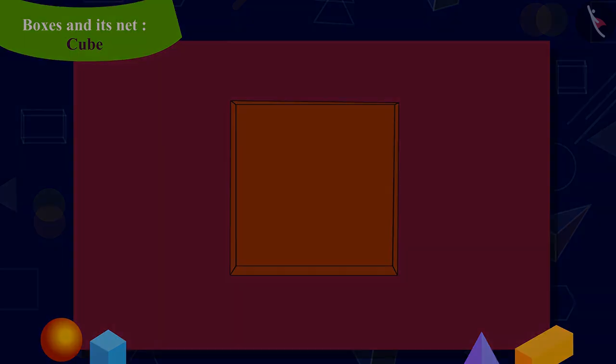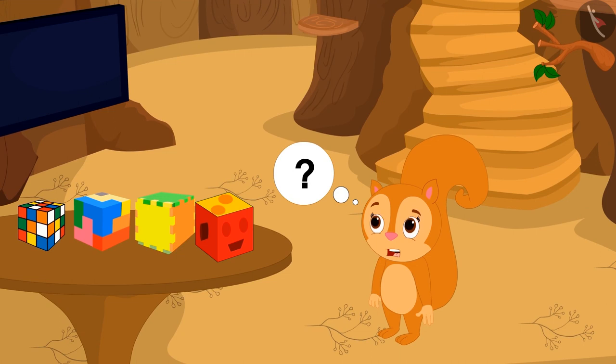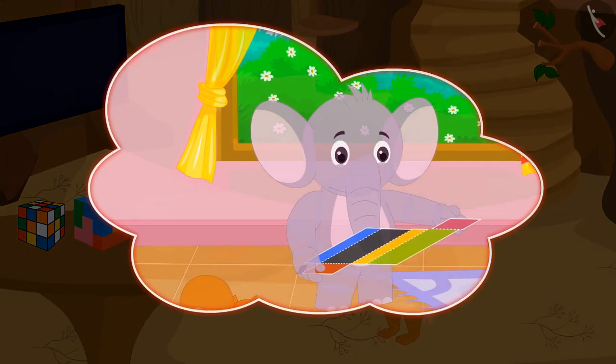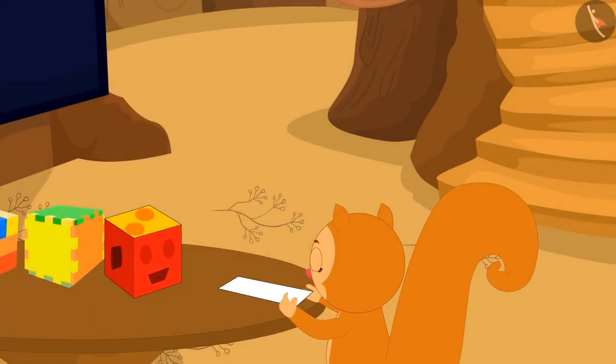Chanda wants to put these gifts in a box and then give it to Appu, but she does not have any box of this shape. Then Chanda remembered the concept of net she learned from Appu.